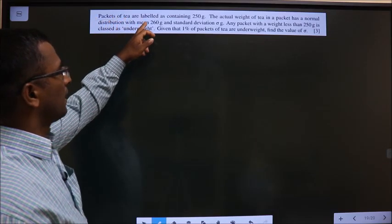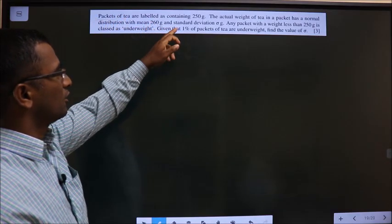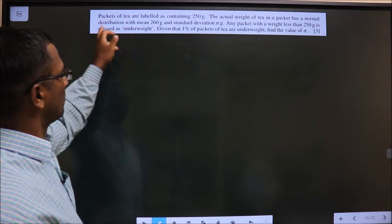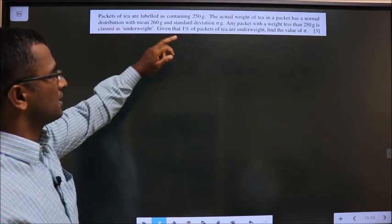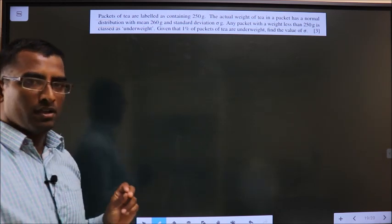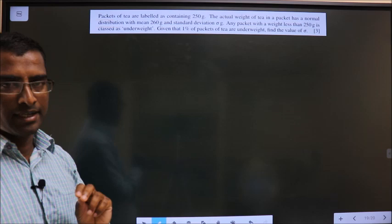Packets of tea are labelled as containing 250 grams. The actual weight of tea in a packet has a normal distribution with mean 260 and standard deviation ρ grams. You came across information, make a note.